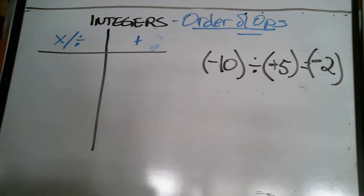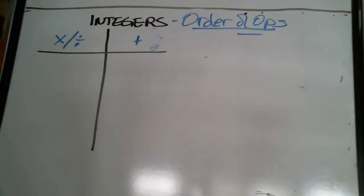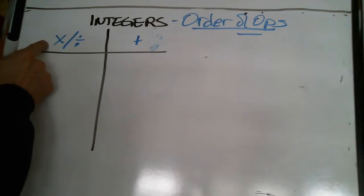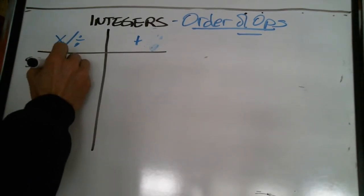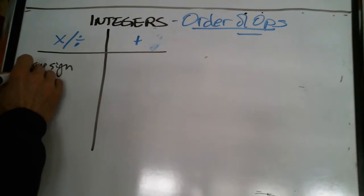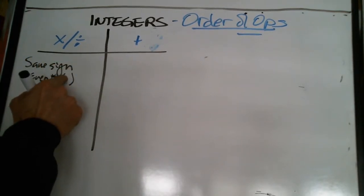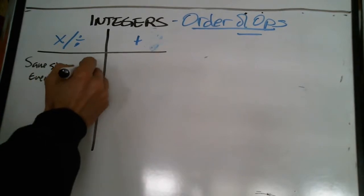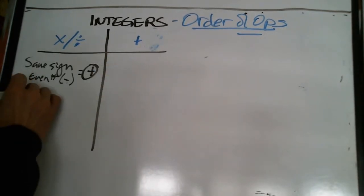Pause the video, take your time, and write it down. Welcome back — I hope you did really well. So when multiplying or dividing, if I have the same sign or an even number of negatives, that is going to be a positive answer. If I have a different sign or an odd number of negatives in my question, the answer is going to be negative.